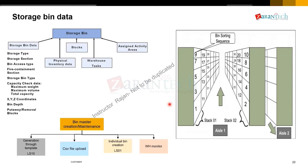Bin masters can be created in four different ways. First, you can generate bins using a template if they follow a standard pattern — for example, 20 aisles with stacks 1 to 30 and levels 1 to 7. You just provide the start and end value and create the bins. This makes more sense for rack storage with proper nomenclature of aisle, stack, and level.